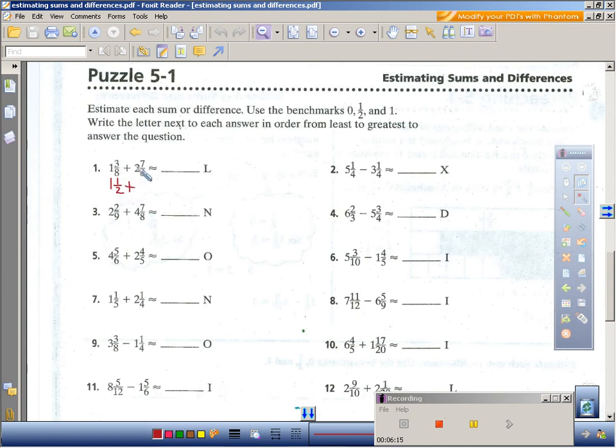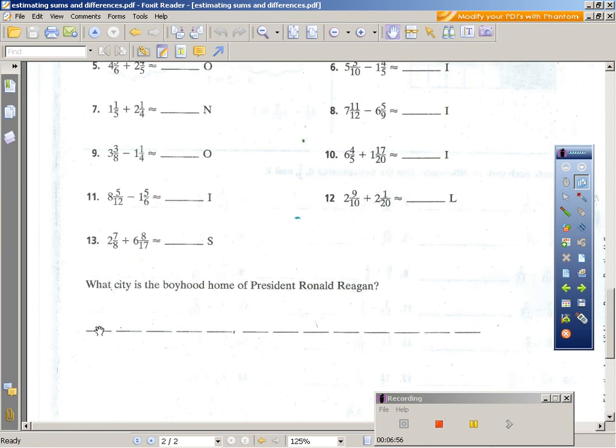So one and three-eighths, I would benchmark that at one and one-half because three is almost half of eight. Plus, well, I have two, but my seven-eighths would benchmark to one whole, so I'd have a total of three. Now I can put my answer here, which is four and a half. Now what's going to happen is once I answer all of these, I'm going to end up with a bunch of different mixed numbers or even just whole numbers. I've got to put them in order from least to greatest to answer the question at the bottom. Now, meaning that the least number, whatever letter that that has on it, is what's going to go in the first blank.